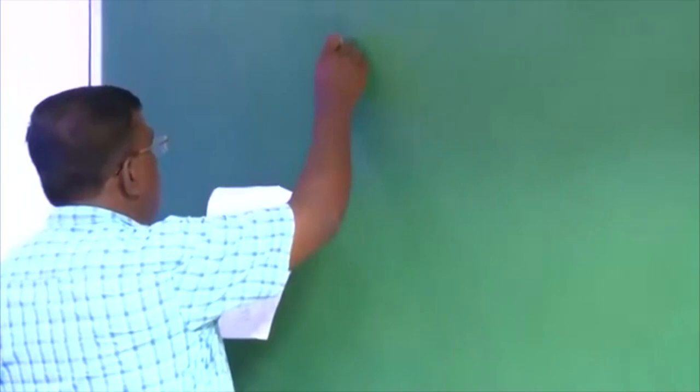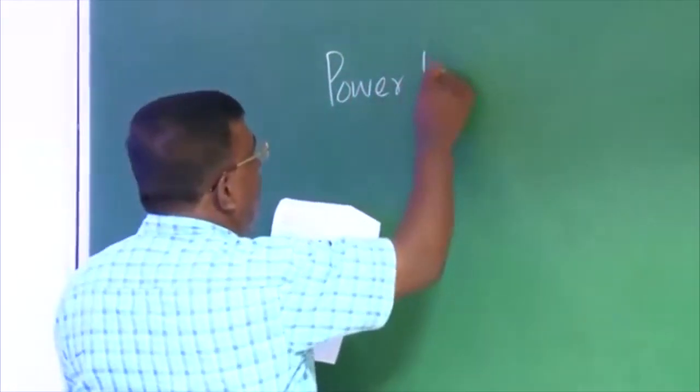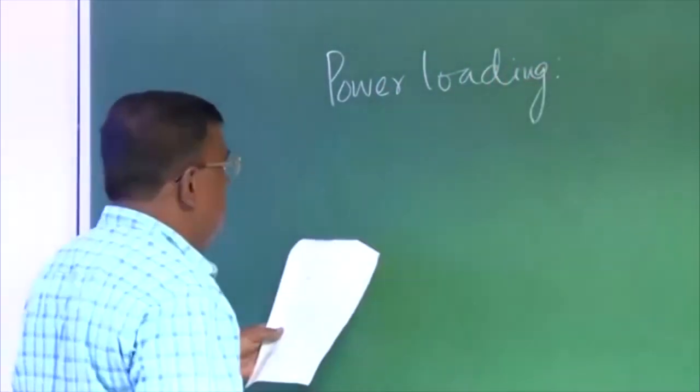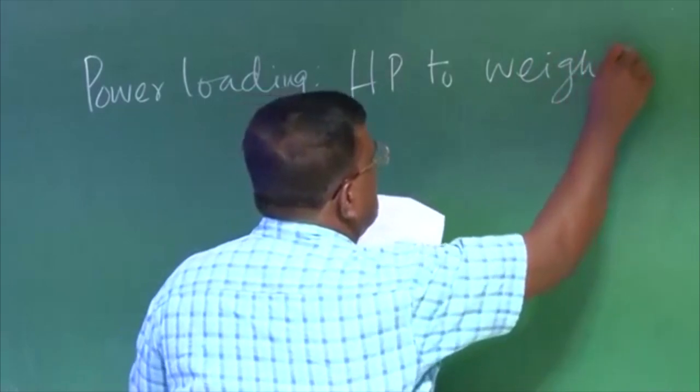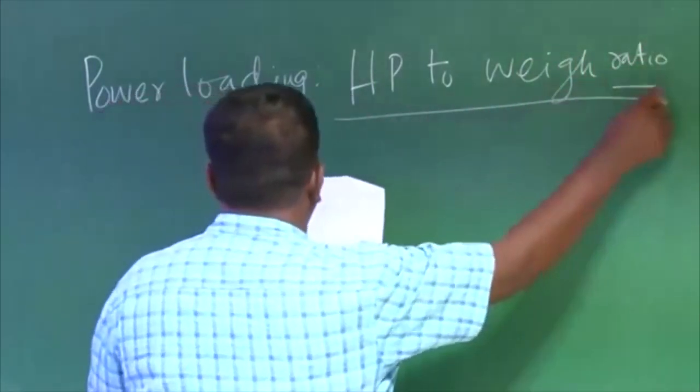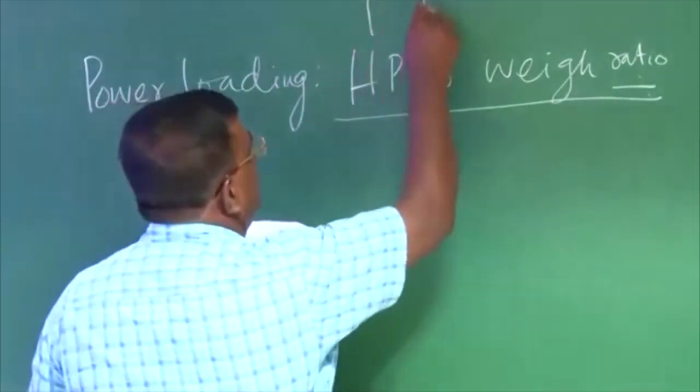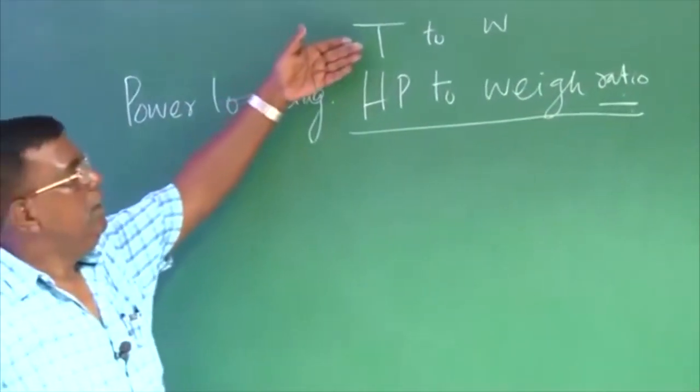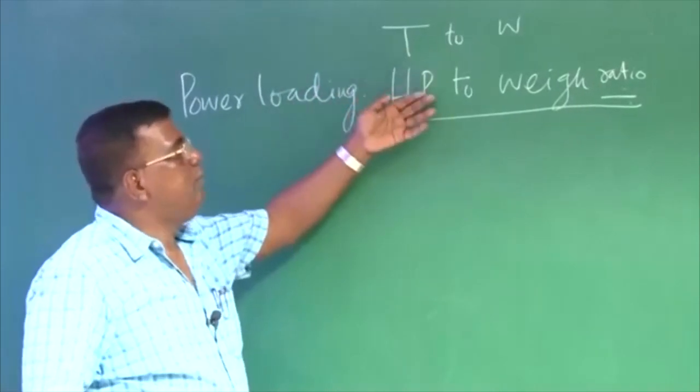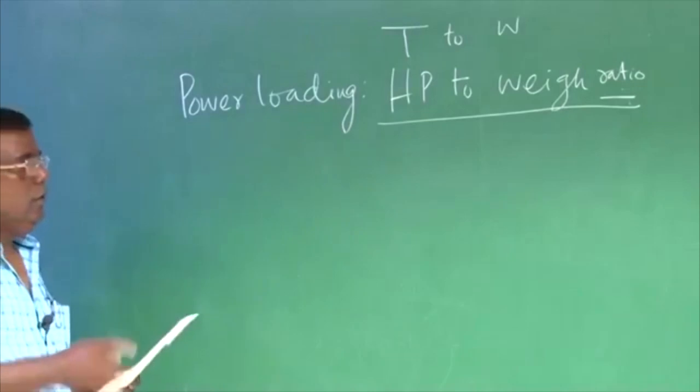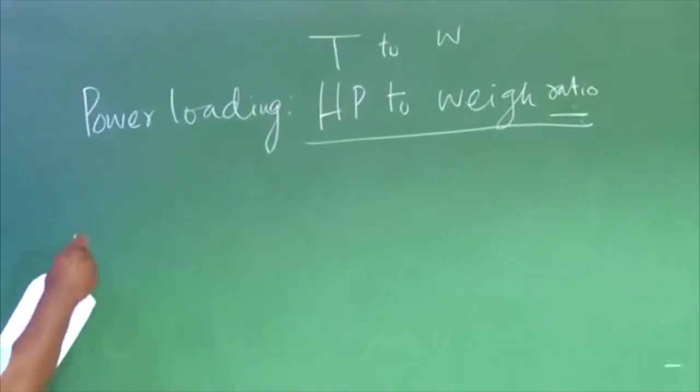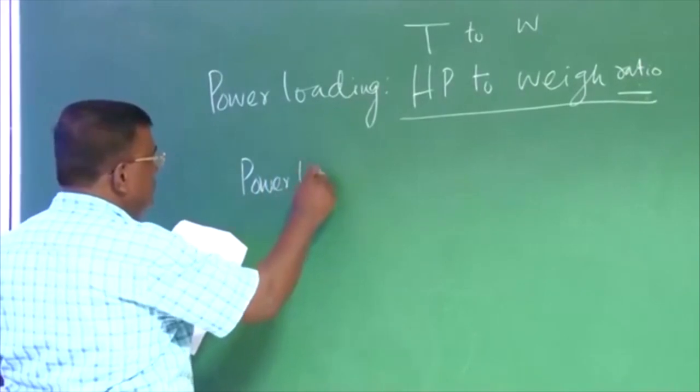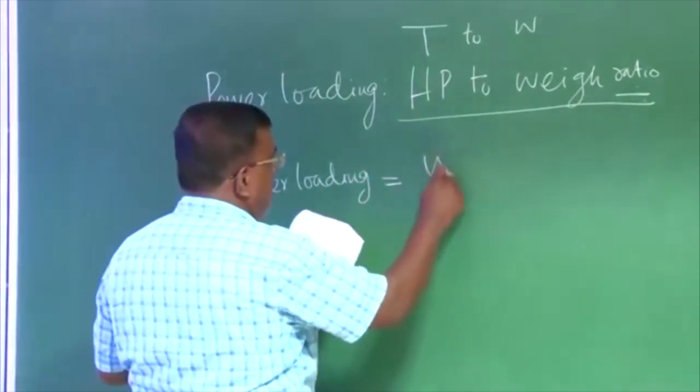So let us see power loading, how it is conventionally defined. Horsepower to weight ratio, that is in our mind, like we have thrust to weight ratio. Naturally, when you translate thrust to horsepower, our mind will say, what is horsepower to weight ratio? That is the natural question. Keep this in mind, and see how in reality, how things are defined.